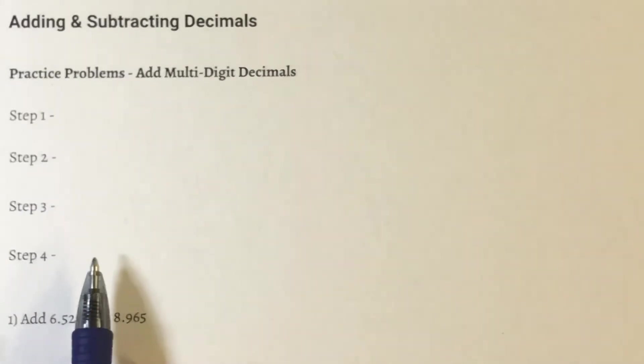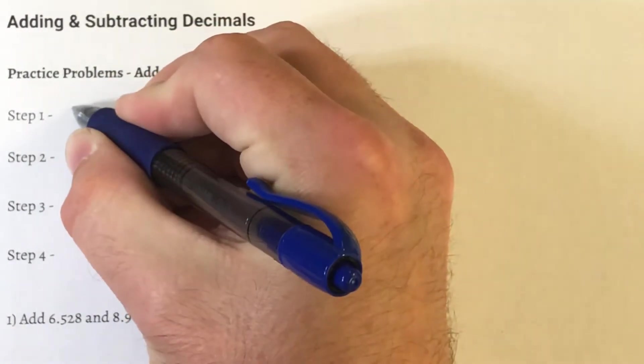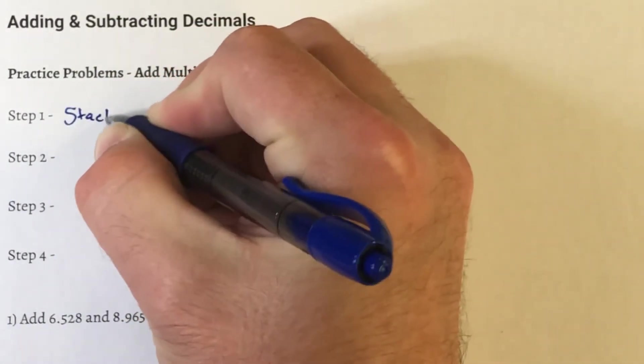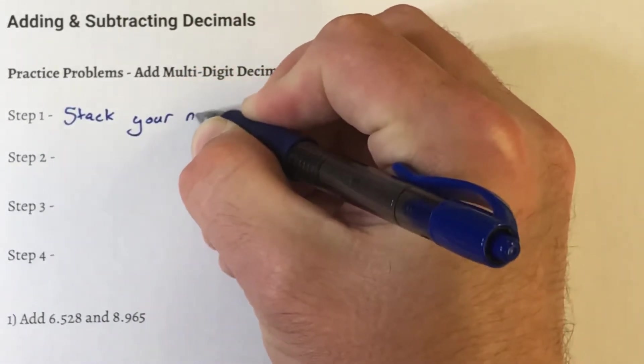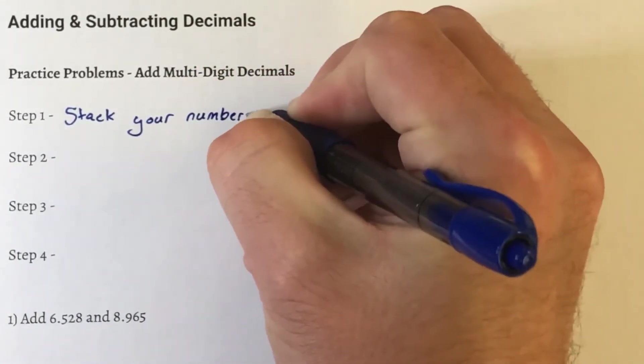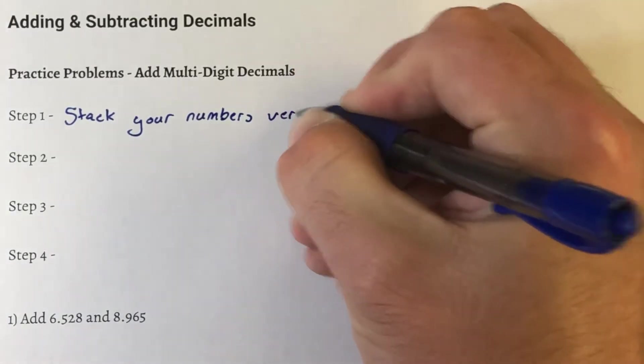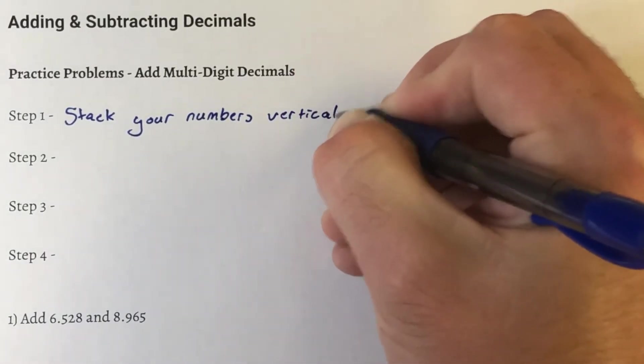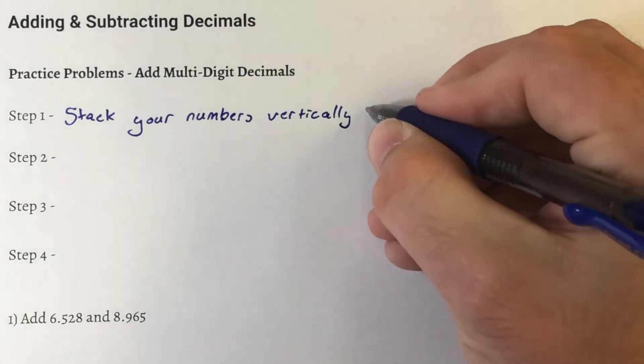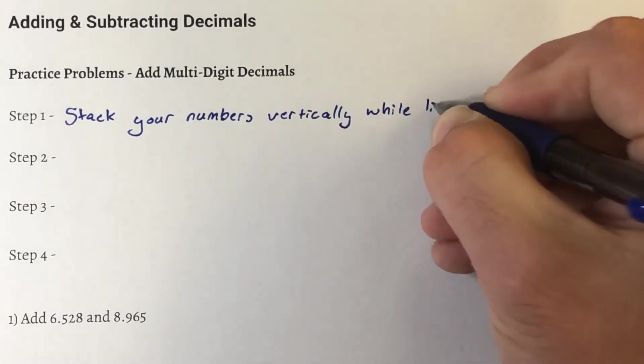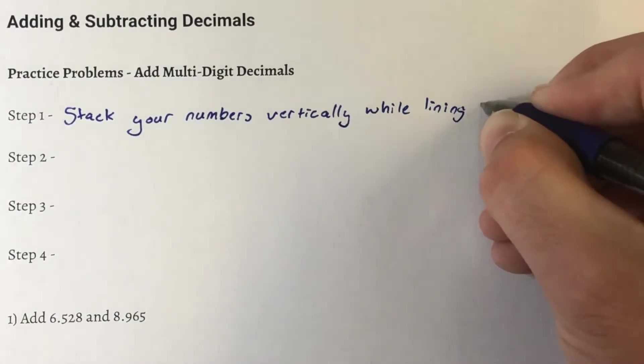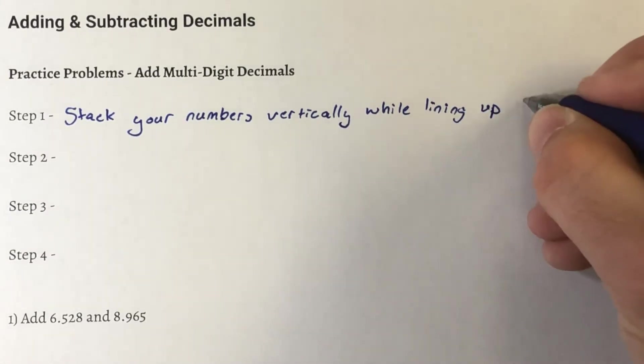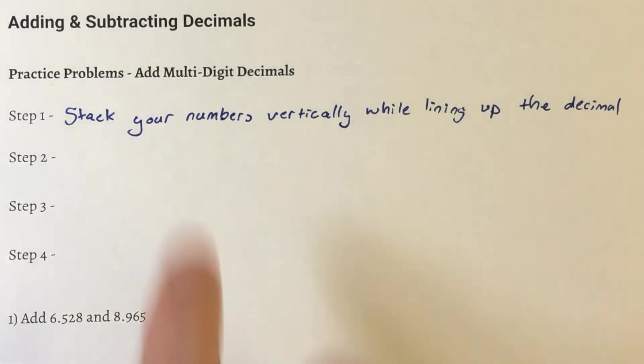We're going to start with adding multi-digit decimals. We've got four simple steps to follow. First step, stack your numbers vertically, in other words on top of each other, while lining up the decimal.